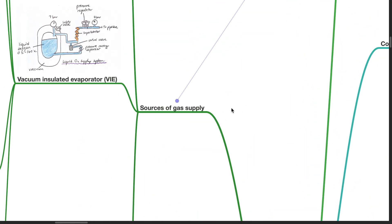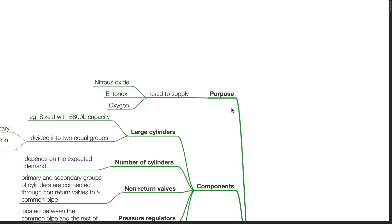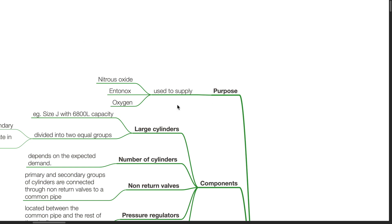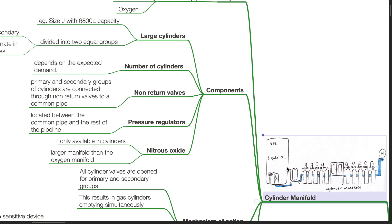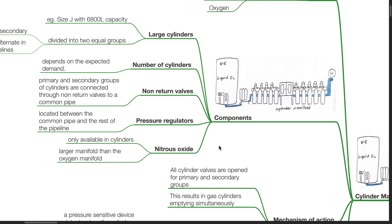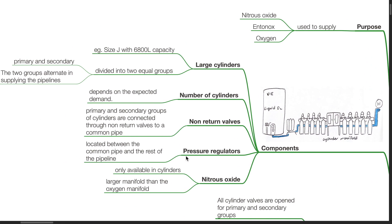Sources of gas supply: Cylinder manifold. Purpose: It is used to supply gases such as nitrous oxide, entonox, and oxygen. Components include large cylinders such as size J with 6800 liters capacity. These are divided into two equal groups, primary and secondary. The two groups alternate in supplying the pipelines. Number of cylinders depends on the expected demand. Non-return valves.